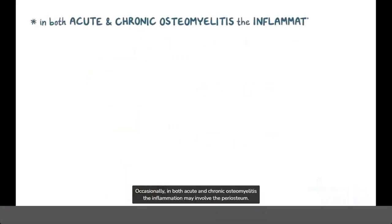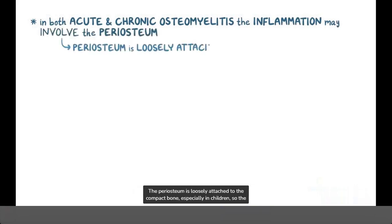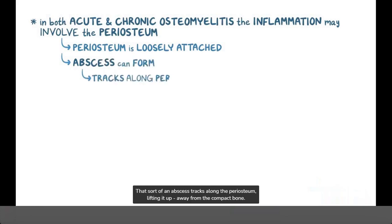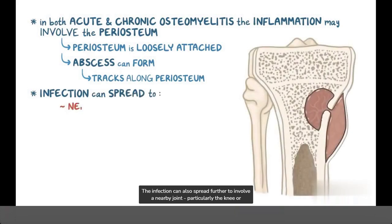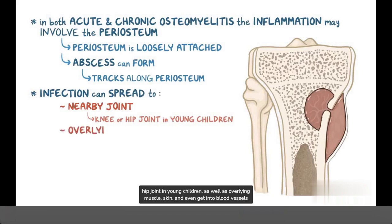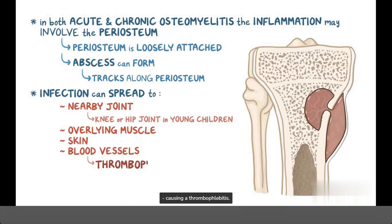Occasionally, in both acute and chronic osteomyelitis, the inflammation may involve the periosteum. The periosteum is loosely attached to the compact bone, especially in children, so the two layers can separate and allow an abscess to form between them. That abscess tracks along the periosteum, lifting it up away from the compact bone. The infection can also spread further to involve a nearby joint, particularly the knee or hip joint in young children, as well as overlying muscle, skin, and even get into the blood vessels, causing thrombophlebitis.